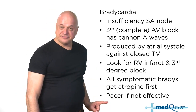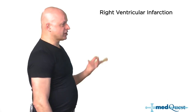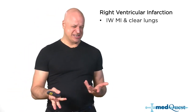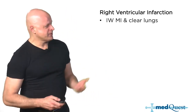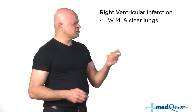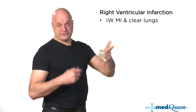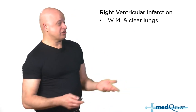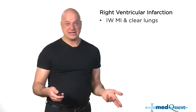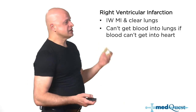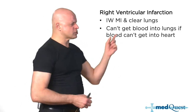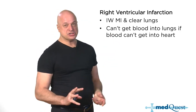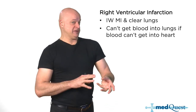If atropine is not effective, then use the pacemaker. Right ventricular infarctions basically present with hypotension and signs of pump failure. The lungs will be clear because the right ventricle can't pump fluid into the lungs. Almost 40% of inferior wall MIs can be associated with some degree of right ventricular infarction.